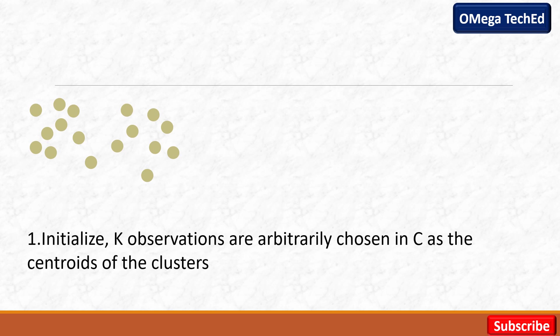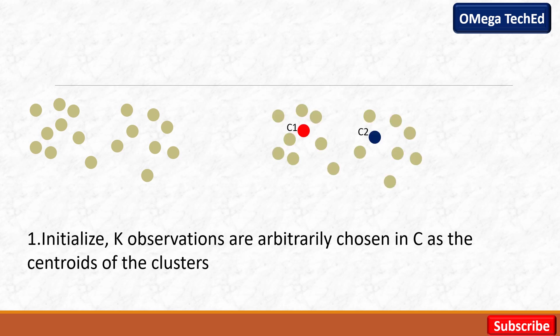Here we have some data points to which we will apply K-means clustering. Our first step is initialization — we initialize cluster centers. Here we take two clusters, so our k-value is 2 and we will create two clusters. In the first step, we randomly choose two cluster centers. This cluster center has been chosen randomly, so our first step is complete.